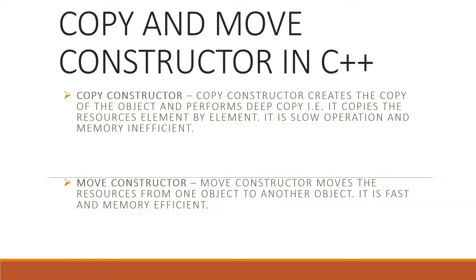Suppose you have two folders in your operating system — Windows, Linux, or Mac. Let's take the Windows example. You have two folders and each folder has one file. If you want to copy the file from one folder to another, you copy and paste it into that folder. By that way, you will have two copies of the file — one in folder one and another in folder two.